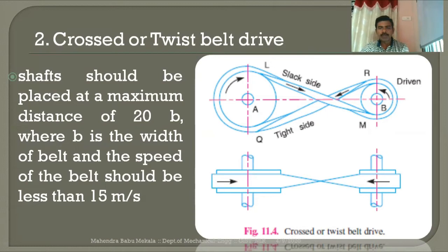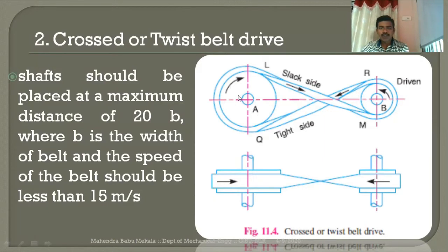The second type is the cross or twist belt drive. It is similar to the open belt drive in that both shafts are parallel to each other and perpendicular to the plane of figure. However, the direction of rotation of the driving and driven pulleys are exactly opposite to each other. The driving pulley rotates in the clockwise direction whereas the driven pulley rotates in the anticlockwise direction. The flat belt placed over the pulleys crosses at the center.